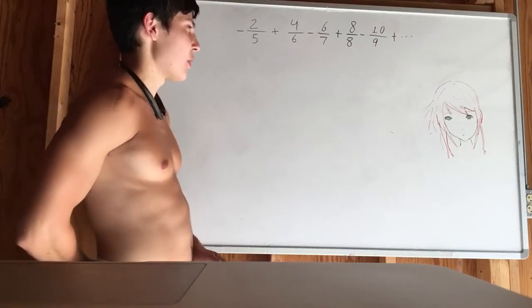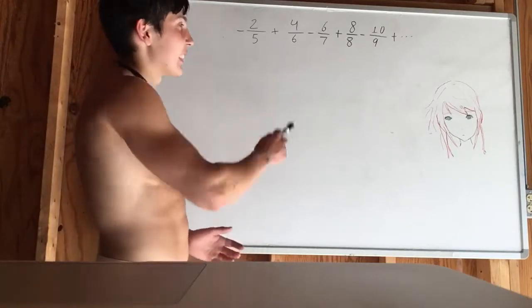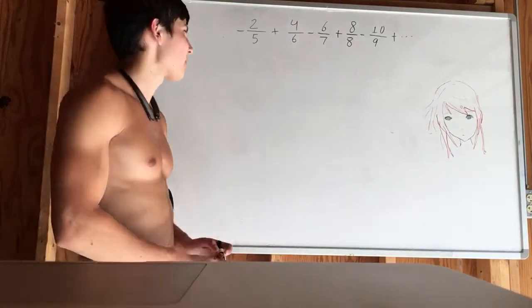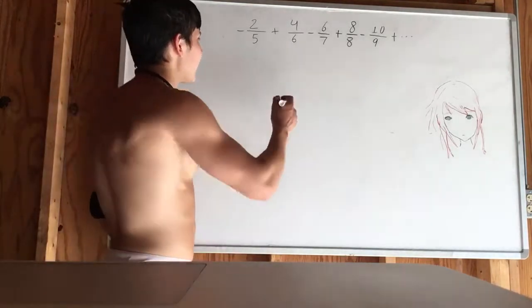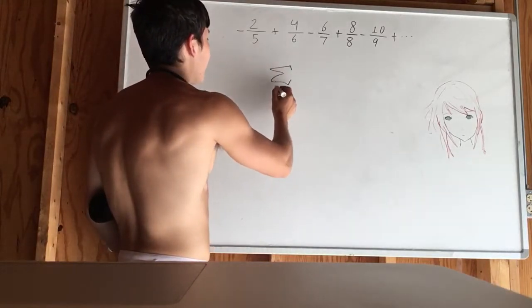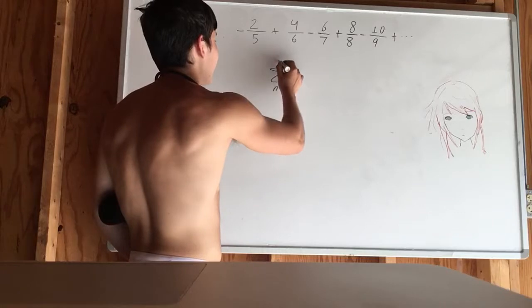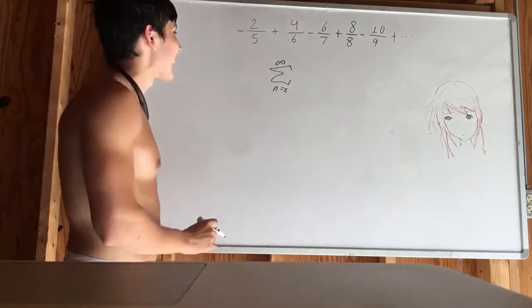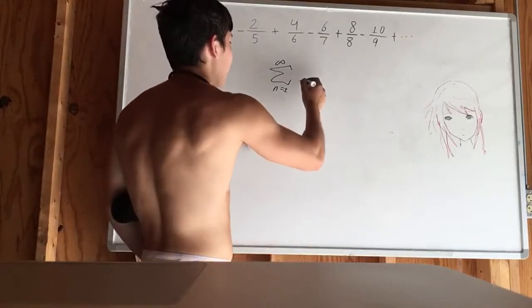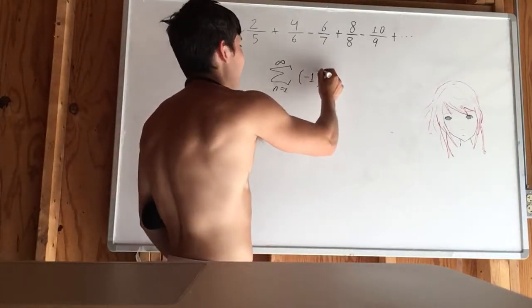That means that we're going to have to convert this into a series and then perhaps just use a divergence test. So let's convert this into a series. So this is going from n equals 1 to infinity. And what would be the terms? Well, for one thing, it's alternating. So we have to make sure that we factor that in.